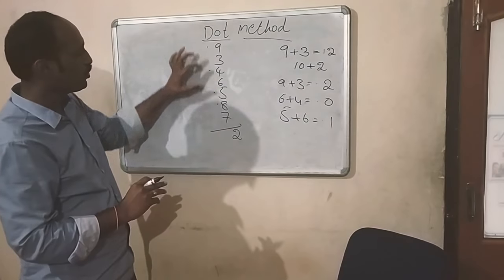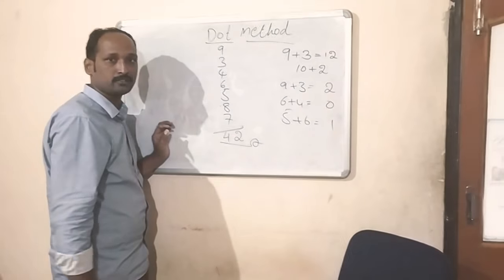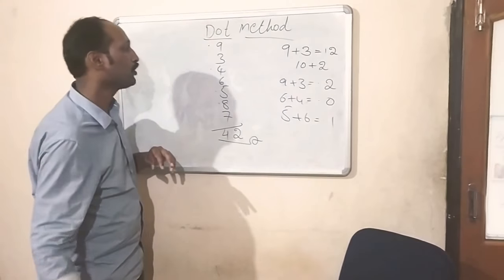Count how many dots are there: 2, 4. These 4 dots write in tens place. Then your answer is completed. This is your answer. One more example we are going to see.